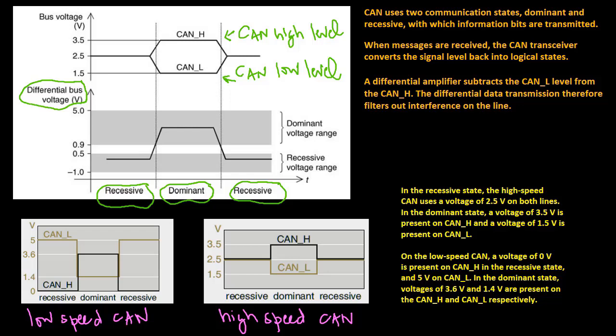A voltage of 1.5 volts is present on CAN low. On the low-speed CAN, a voltage of 0 volts is present on CAN high in the recessive state, and 5 volts on CAN low. In the dominant state, voltages of 3.6 volts and 1.4 volts are present on the CAN high and CAN low respectively.